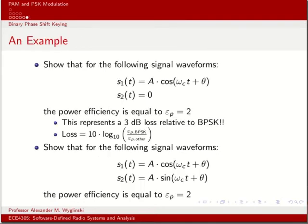Let's look at three BPSK representations. Case 1: S_1(t) = A·cos(ω_c·t + θ) and S_2(t) = A·cos(ω_c·t + θ + π). Case 2: S_1(t) = A·cos(ω_c·t + θ) and S_2(t) = 0. If you do the math, case 2 gives a power efficiency of only 2 — half that of case 1, which is a 3 dB loss. Case 3: S_1 is a cosine and S_2 is a sine — 90 degrees out of phase — and this also yields epsilon_p = 2, the same 3 dB loss relative to epsilon_p = 4.